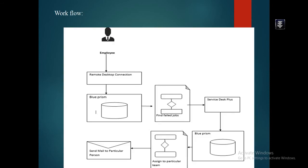First I will explain how an employee does this work manually. The employee goes to Remote Desktop Connection and logs in. From there, they go to the Power Center Workflow Monitor application and check if there is any failed job. After getting the failed job, they collect all the information about the failed job and details about the technician. Then they go to the Service Desk Plus application to raise a ticket to the particular technician about the failed job and send a mail.